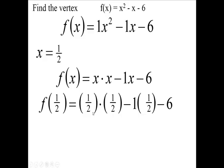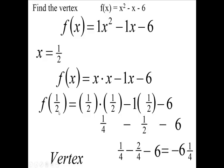1 times 1 is 1, 2 times 2 is 4. We're going to have 1 fourth, and we're going to have 1 times 1 half, minus 1 times 1 half. Of course, you have the minus 6 here. You have 1 fourth, and 1 half is 2 fourths. Don't forget, you're minus 6. So when you do that, you're going to get negative 6 and 1 fourth. So the vertex is 1 half and minus 6 and 1 fourth. That's the vertex.